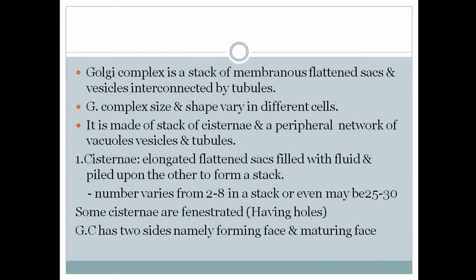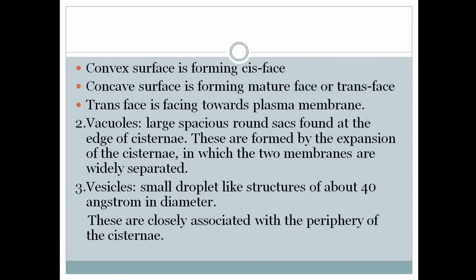The Golgi complex has two sides: the forming face and the maturing face. The convex surface forms the cis face, and the concave surface forms the mature face or trans face. The trans face is facing towards the plasma membrane, and the cis face is towards the nucleus, as you can see in the diagram.